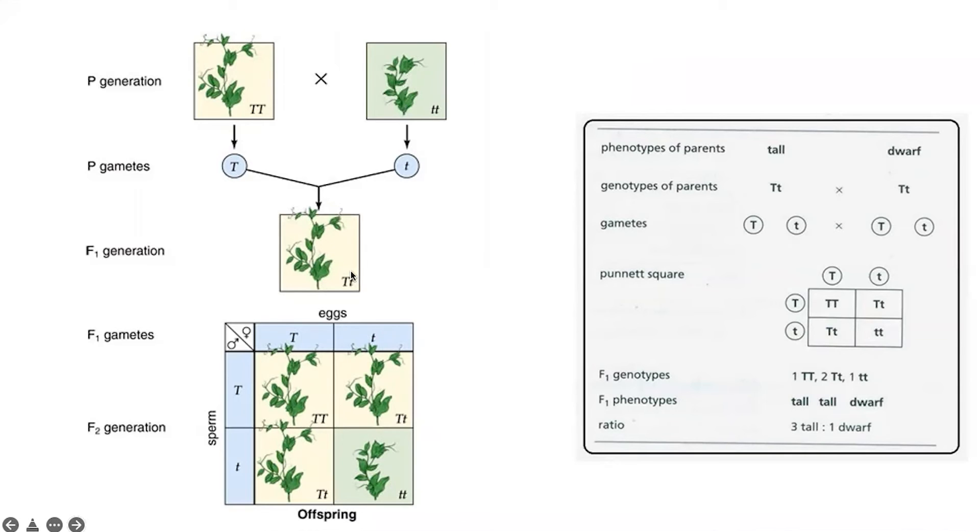Then he selfed this tall plant. Now, a true breeding tall plant always gives tall plants. But this particular tall plant, which was a hybrid of the tall and the dwarf plant, not showing any characteristic over here, when crossed together showed, and this is all stuff you have studied in school, showed a basic ratio of 3 is to 1 for tall plants to dwarf plants. So the dwarf characteristic magically reappeared in the F2 generation, but it was not seen in the F1 generation.